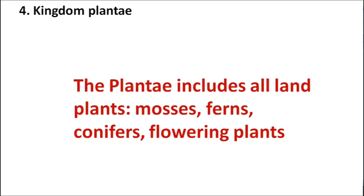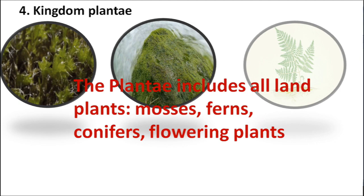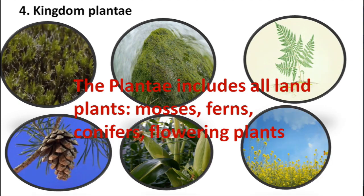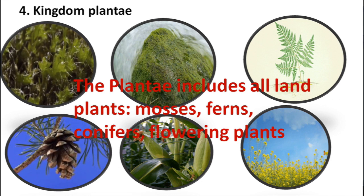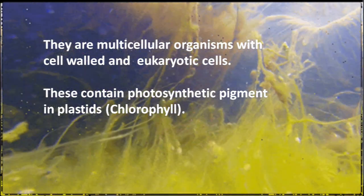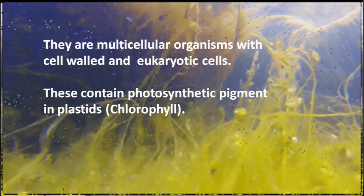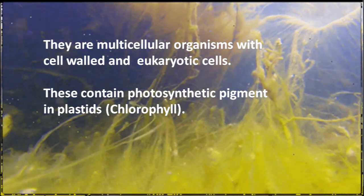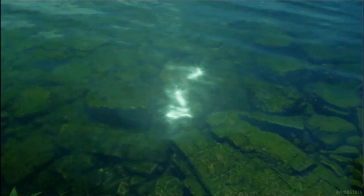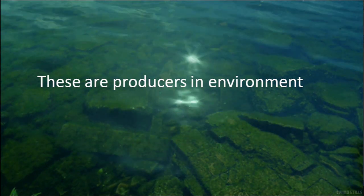The fourth kingdom is Plantae. It includes all land plants and aquatic plants like mosses, ferns, conifers, and flowering plants. All green plants belong to kingdom Plantae. They are multicellular organisms with a cell wall and eukaryotic cells. They contain photosynthetic pigment in plastids called chlorophyll. These are producers in the environment.